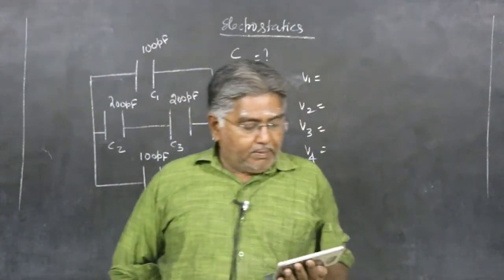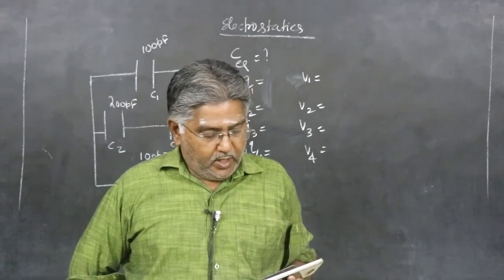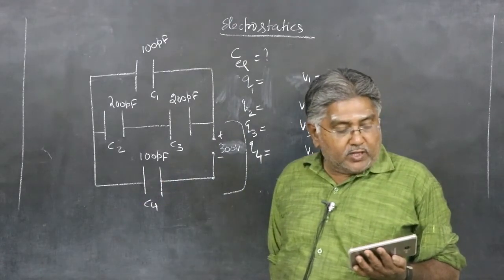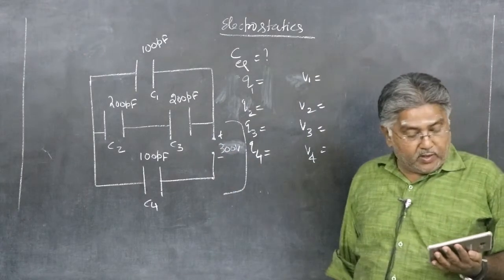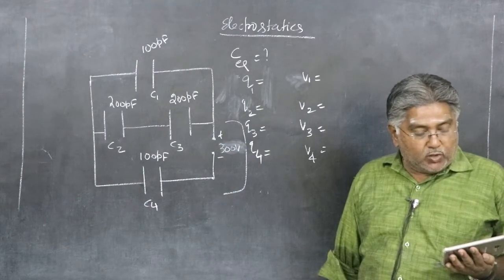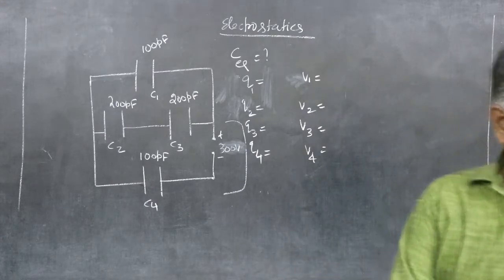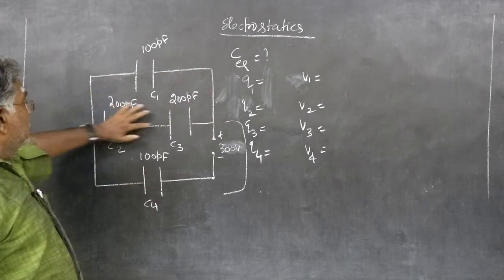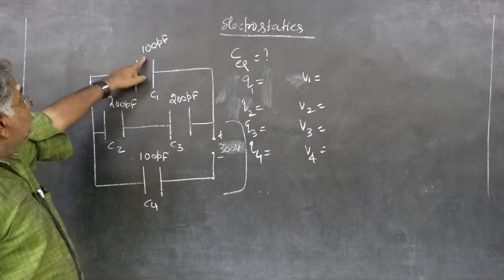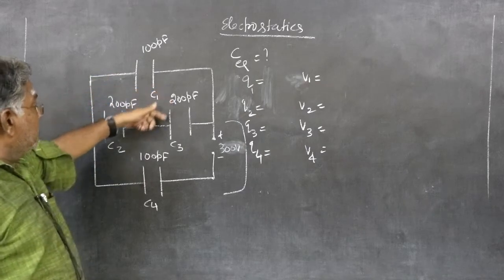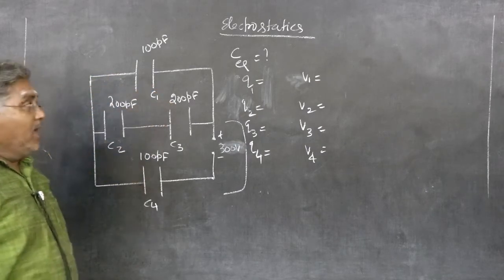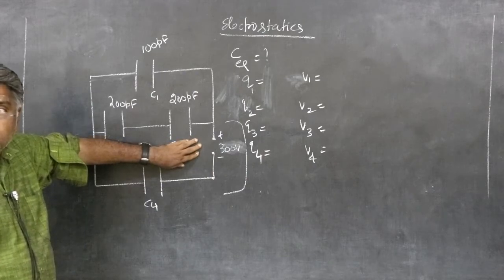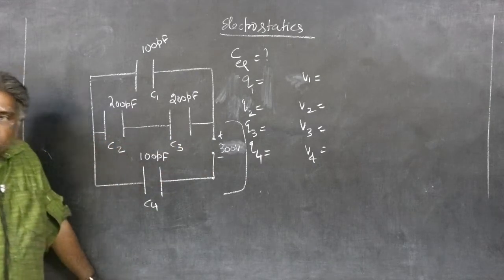Next question: obtain the equivalent capacitance of the network in figure 2.35. This is that figure. For a 300 volt supply, determine the charge and voltage across each capacitor. You are given a network of 4 capacitors with capacitance values 100 pF, 200 pF, 200 pF, and 100 pF, labeled C1, C2, C3, and C4. The supply voltage is 300 volt — positive on one end, negative on the other.